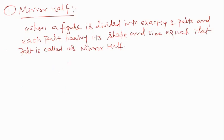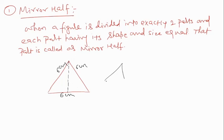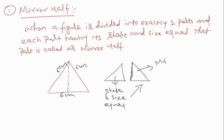Look at this triangle carefully. If I cut this triangle from this point, I draw a straight line using a scale and pencil. Suppose this is a triangle having equal sides of 6 cm, 6 cm, 6 cm, and I divide it into two parts. One part looks like this and the other part looks like this. If the shape and size of one part is equal to the other, then each part is called the mirror half of the other. I hope all of you understand the concept of mirror half clearly. We will learn the next part in the next topic. Thank you and have a nice day.